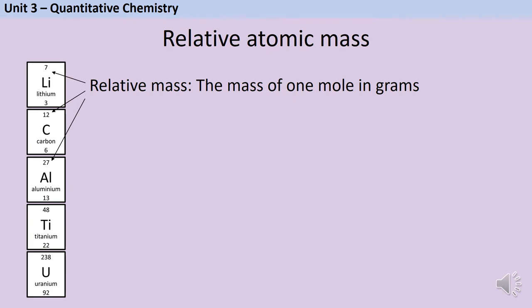So if I took one mole of lithium—remember that's 6.02 times 10 to the 23 atoms—those atoms all together would have a mass of 7 grams. And if I took one mole of aluminium that would have a mass of 27 grams. And if I took one mole of titanium it would have a mass of 48 grams.